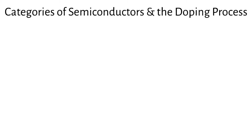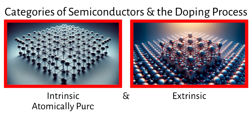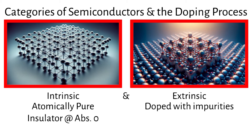There are two main categories of semiconductors: intrinsic and extrinsic. Intrinsic semiconductors are pure semiconductors without any impurities. At absolute zero, they behave like insulators because the electrons are bound within the valence band. As temperature increases, some electrons gain enough energy to jump to the conduction band, allowing current to flow.